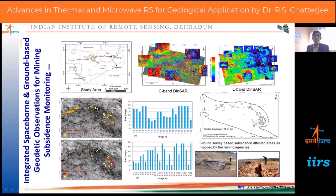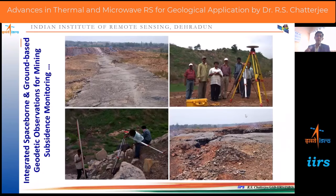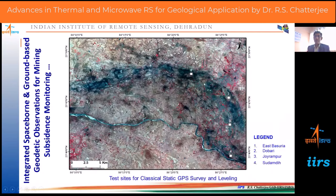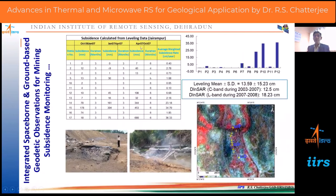Radar interferometry can also be used for mapping and measuring land subsidence due to mining. Using a multi-frequency approach with C-band and L-band, we produced land subsidence maps and compared them with ground-based leveling-based maps. We integrated campaign-mode GNSS and digital leveling techniques. The comparative analysis of results from four locations studied by interferometry, campaign-mode GNSS, and leveling techniques shows very good agreement.